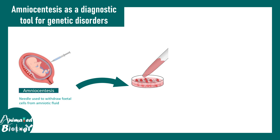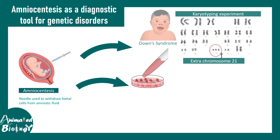For example, if a doctor suspects from the ultrasound report of a baby that there is a chance of Down syndrome, he or she would suggest confirmatory amniocentesis and karyotyping. The amniocytes are taken, cultured, and from that the karyotype is performed. Karyotyping is basically looking at the chromosomal profile, and in this case trisomy 21 can be observed from the karyotype.